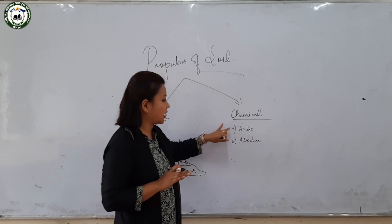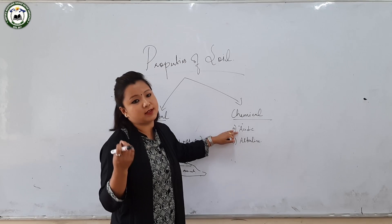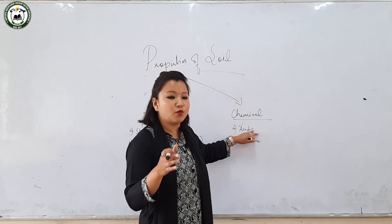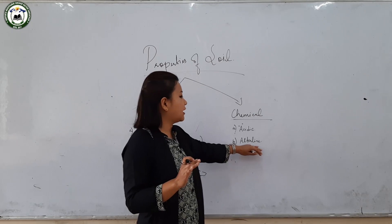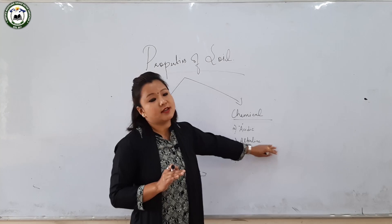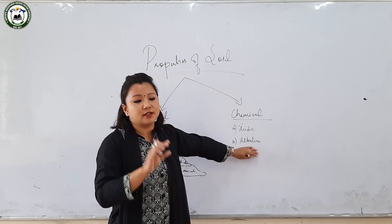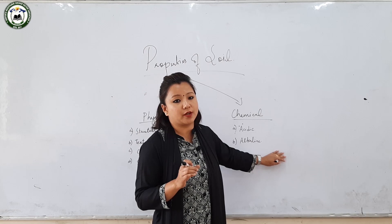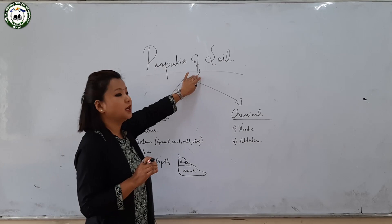Coming to the chemical properties: these are divided into acidic and alkaline nature. Acidic soil has no calcium or lime content — it is very infertile, and leaching is more profound with no accumulation. Alkaline soils have a pH less than 7, which means more concentration of lime, making the soil very fertile with no leaching or washing away of materials.